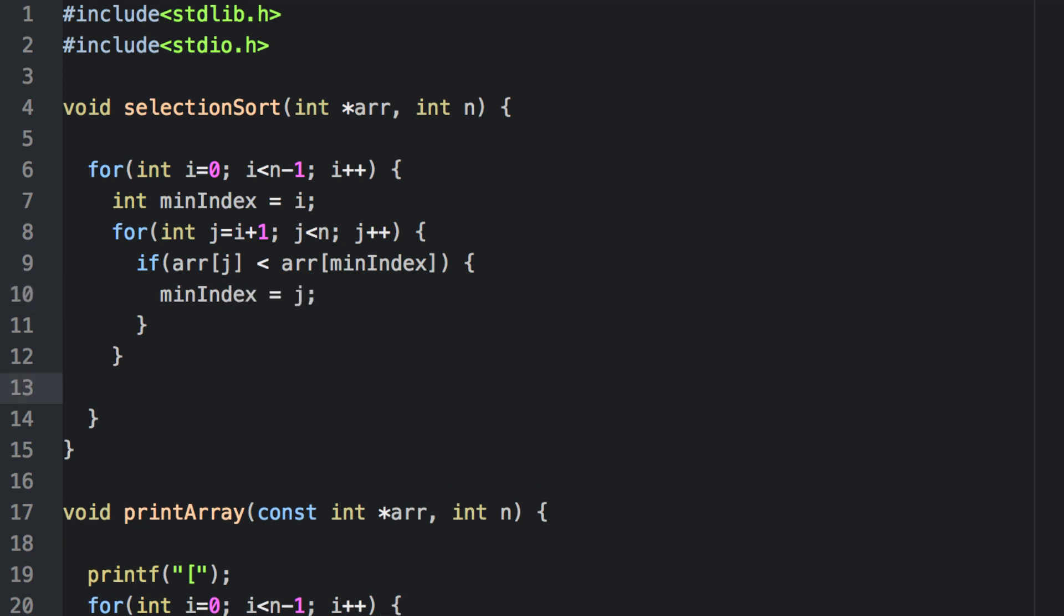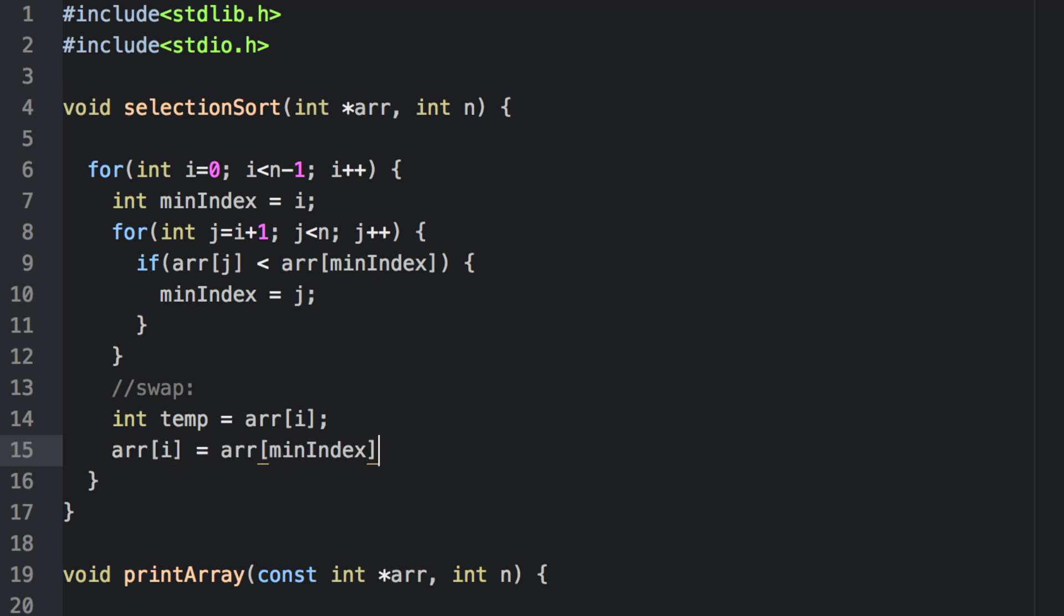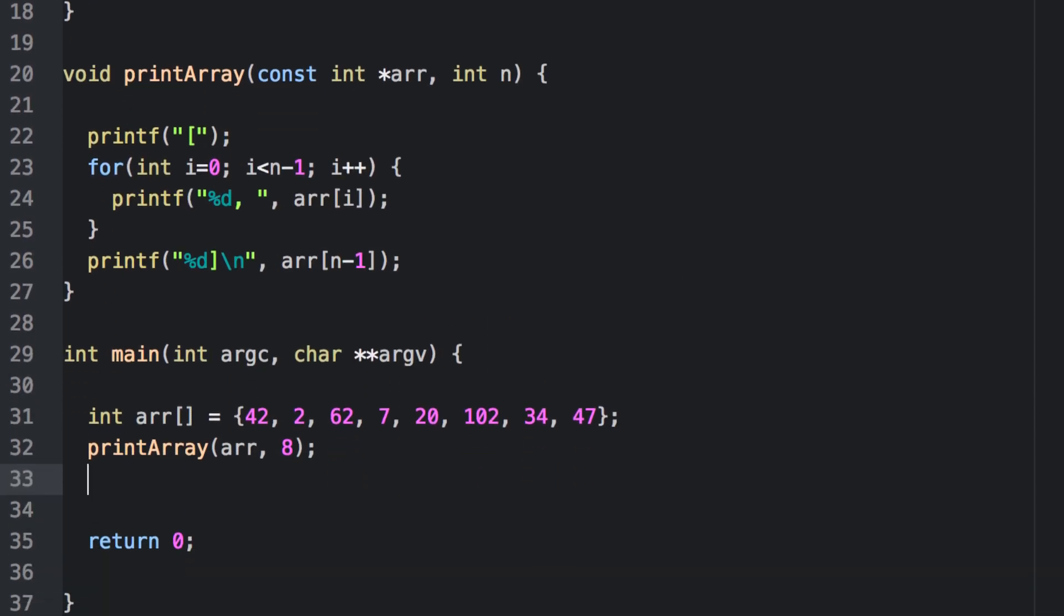Now after we've found the minimum element, we need to put it where it belongs. So we need to swap the element at min index and the element at the i-th index. To swap, we simply place the i-th element into a temporary variable, place the element from the minimum index into the i-th index, and then put our temporary variable back into the min index. Let's test it out.